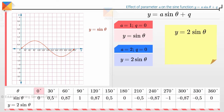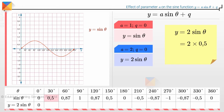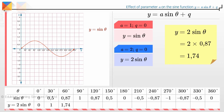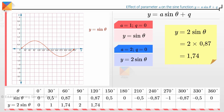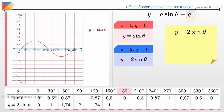At theta equals 0 degrees, y equals 2 sine 0 degrees equals 2 times 0 equals 0. At theta equals 30 degrees, y equals 2 times 0.5 equals 1. At theta equals 60 degrees, y equals 2 times 0.87 equals 1.74. At theta equals 90 degrees, y equals 2 times 1 equals 2. At theta equals 120 degrees, y equals 2 times 0.87 equals 1.74. At theta equals 180 degrees, y equals 2 times 0 equals 0.